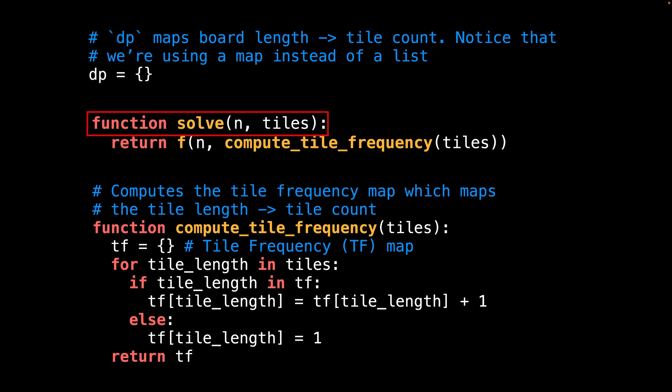The recursive implementation takes the same inputs as the iterative approach: the board size and the tiles array. Inside the solve function, all I do is stage a call to the recursive function f. In addition to the board length, I also provide the tile frequency map as another argument to the function, which gets calculated below in the compute tile frequency method.